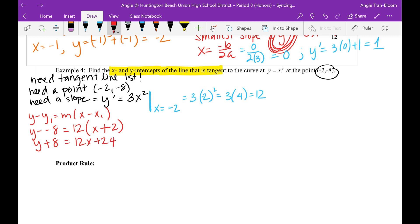I will now subtract 8 from both sides. So y is going to be 12x plus 24 minus 8. That's going to give me 16. So y equals 12x plus 16. That's the tangent line.